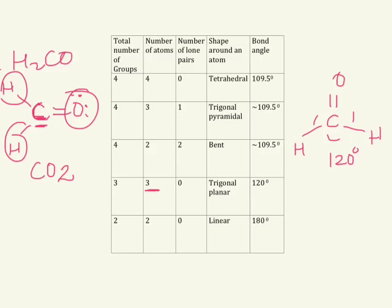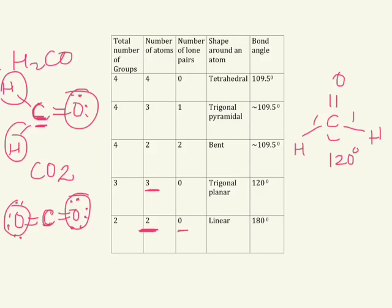Let's take the example of carbon dioxide. This is the Lewis structure of carbon dioxide. We want to find out the molecular shape by looking at the arrangement around the central atom. How many atoms are around the central atom? Carbon is the central atom and there are two oxygens around it. Is there any lone pair on the central atom? No. So if there are two groups and both are atoms, the shape will be linear — we can see this shape is linear. The bond angle is 180 degrees.